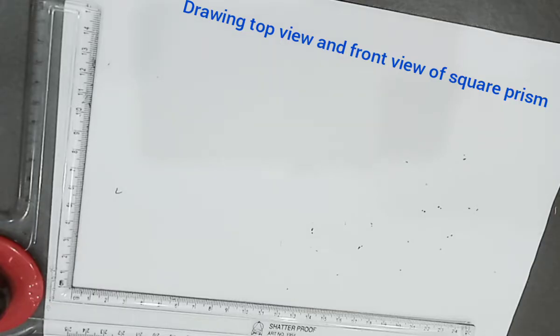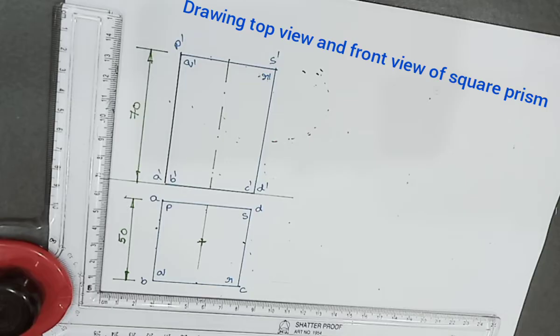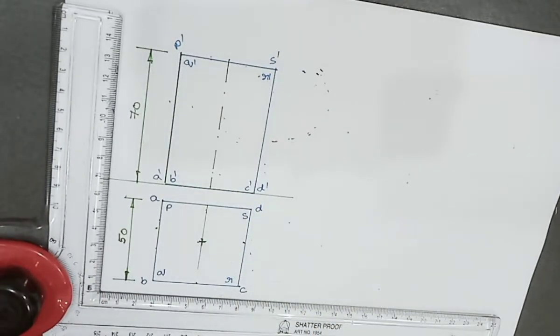Since the square prism is resting on its base on HP, the top view is a square shape, and with axis parallel to VP, in front you will get rectangular shape. We have to construct this square prism into isometric view, so for that first step is we have to draw a ground line.